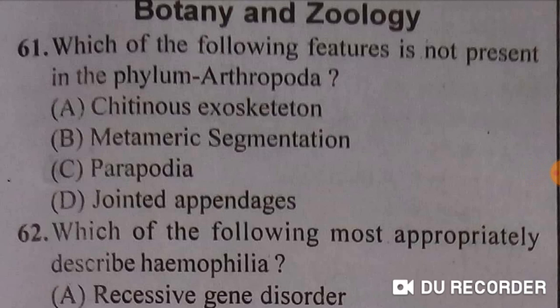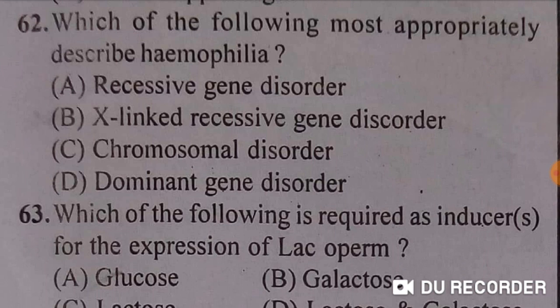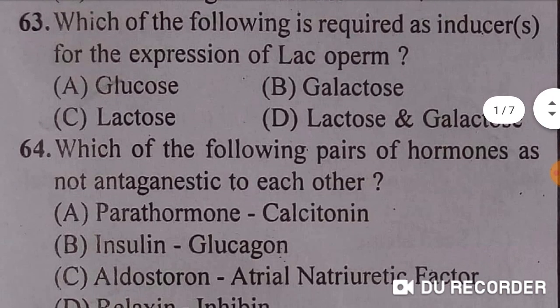Our first question is: which of the following features is not present in phylum Arthropoda? Chitinous exoskeleton, metameric segmentation, and jointed appendages are features of phylum Arthropoda. The feature not belonging to Arthropoda is parapodia — option C is the correct answer. Next: which of the following most appropriately describes hemophilia? Hemophilia is an X-linked recessive gene disorder — option B is correct.